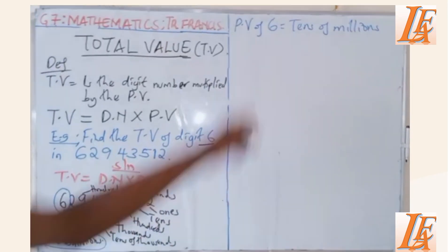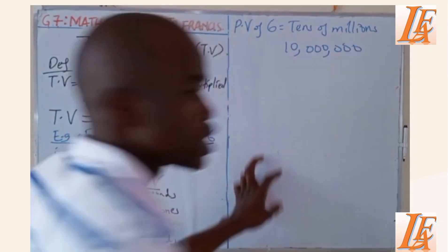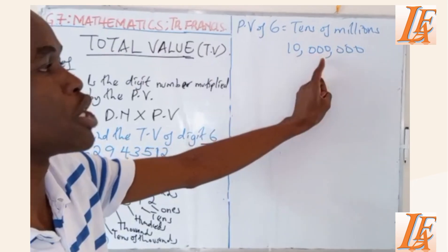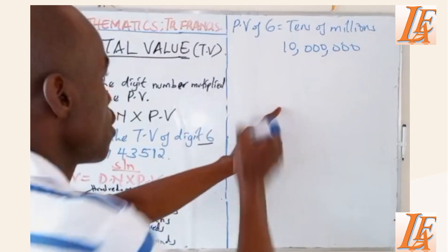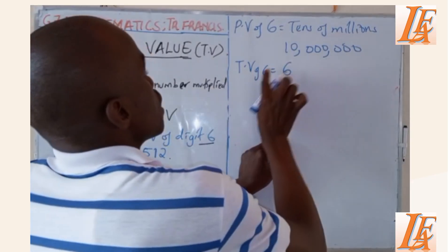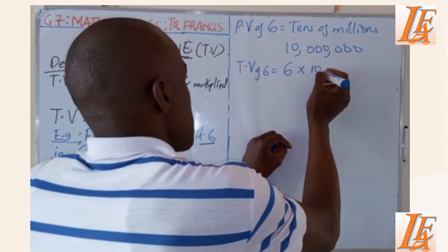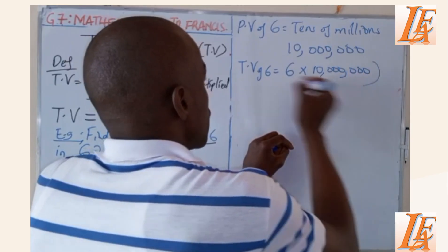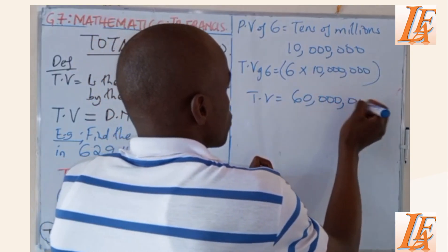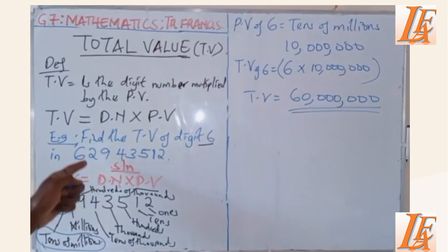And the digit is 6. Therefore, tens of millions is written as ten million — a million has 6 zeros, so tens of millions is 10,000,000. Therefore, the total value of digit 6 will be the digit number 6 times the place value, which is ten million. Therefore, the total value is 60 million. That is the total value of digit 6 in this given number.